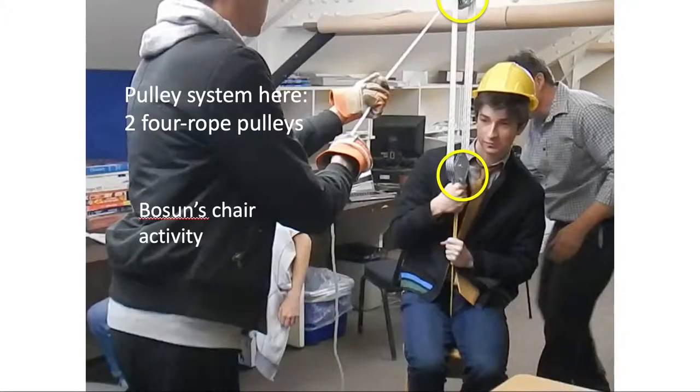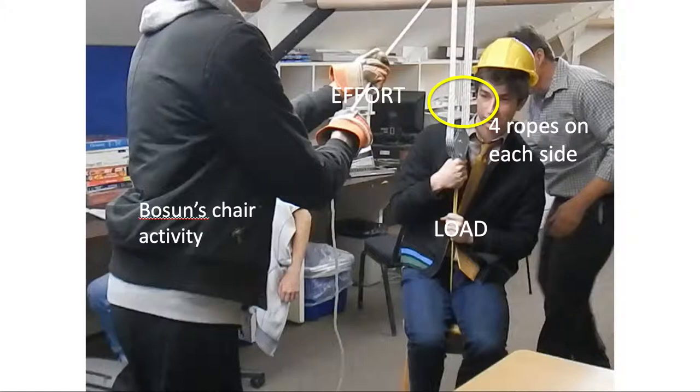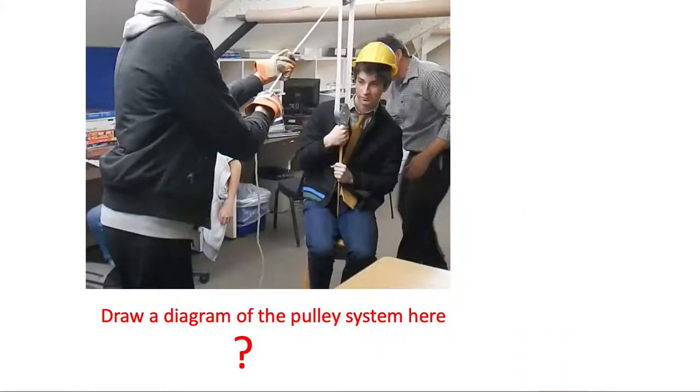So here there are two four-rope pulleys, top and bottom, and so four ropes on each side. And draw a diagram of the pulley system.